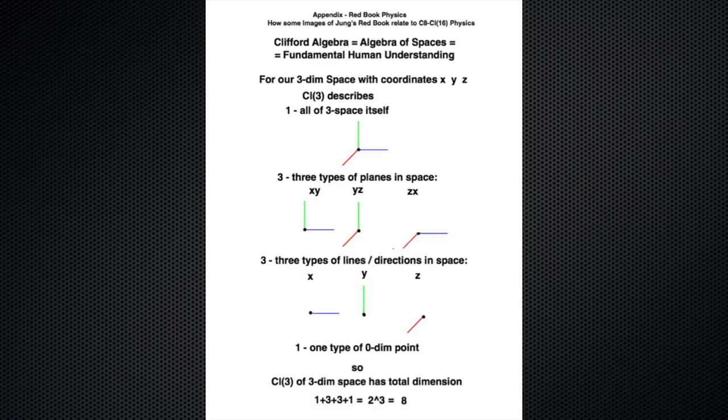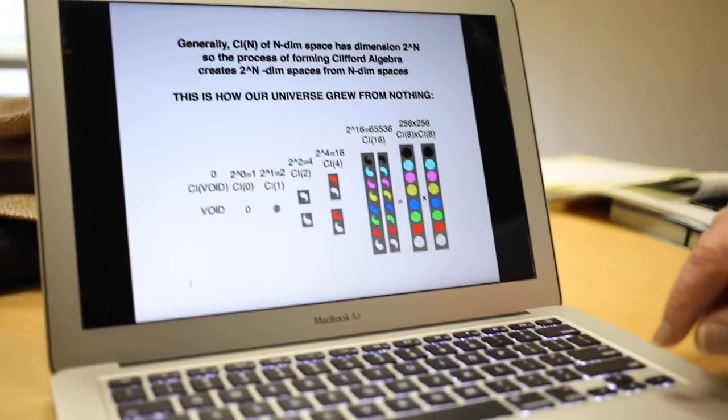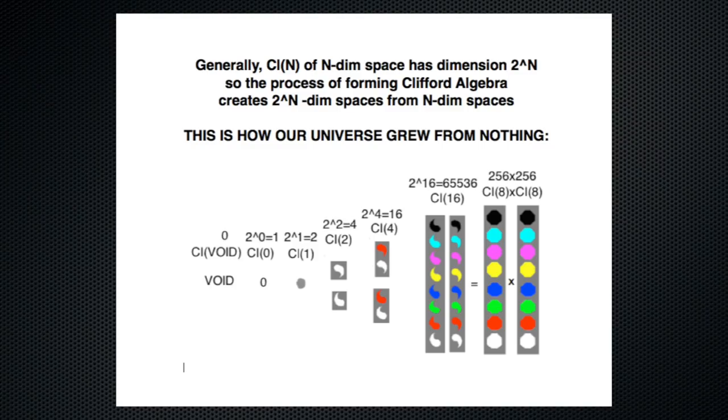Clifford Algebra of three-dimensional space has one plus three plus three plus one dimensions. It's an eight-dimensional structure with total dimension eight, which is two cubed. Generally, Clifford Algebra of an n-dimensional space has dimension two to the nth. David Finkelstein is the guy who started doing this.